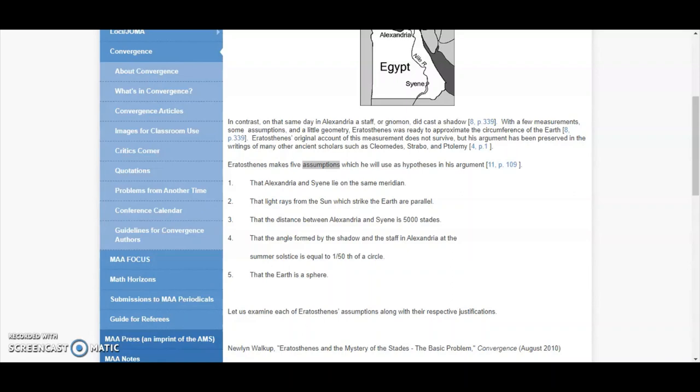We can discount number 5 that the earth is a sphere because it is not. There is a big problem with number 3 where the distance is concerned.